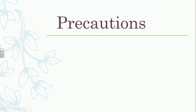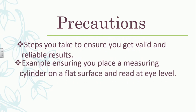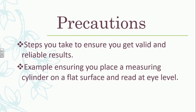Precautions are straightforward — they are steps you take to ensure you get valid and reliable results. You're doing things to make sure you get good results. For example, you don't want to hold a measuring cylinder in your hand. You want to ensure you place the measuring cylinder on a flat surface and read it at eye level. That is a precaution to ensure you get accurate results.